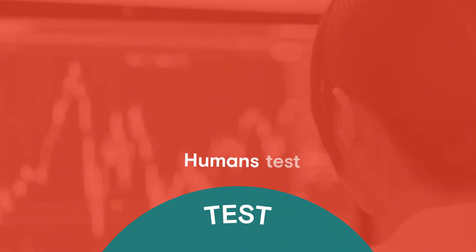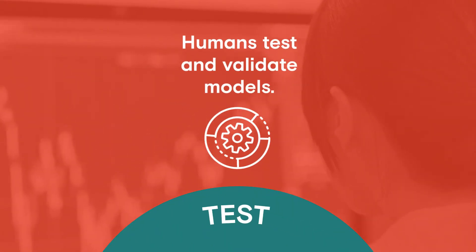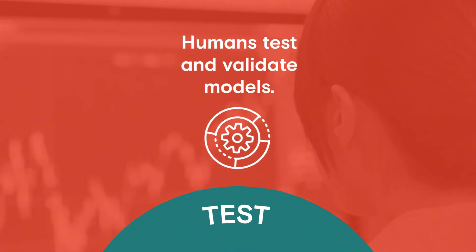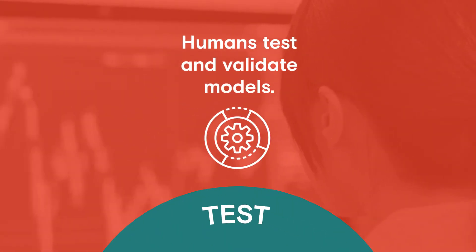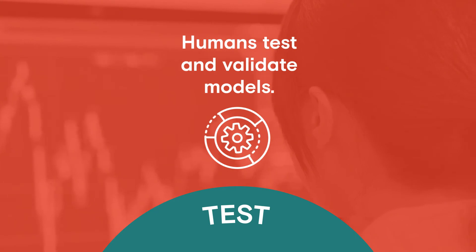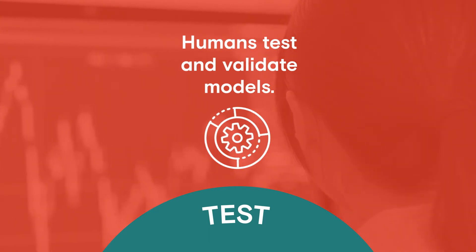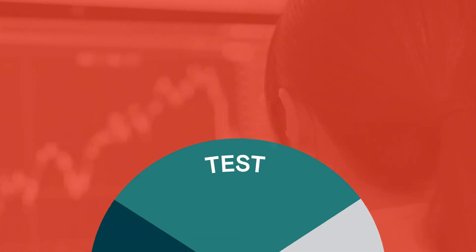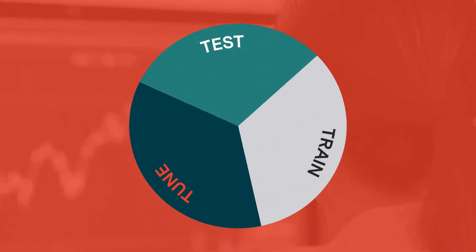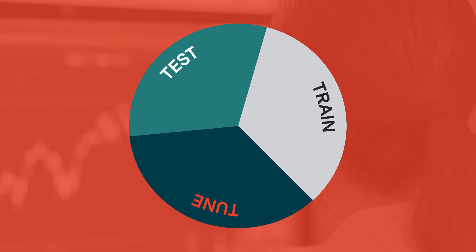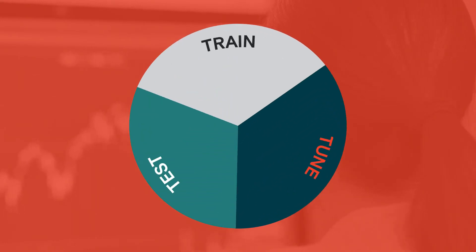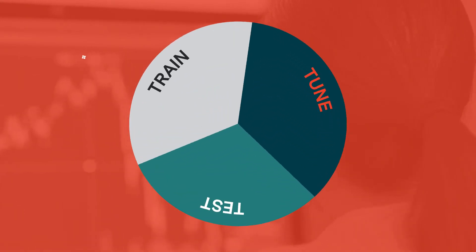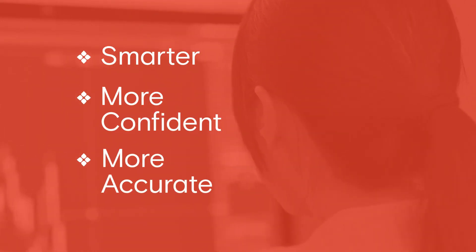Lastly, humans test and validate a model by scoring its outputs where there are errors or low-confidence predictions. These three actions provide a continuous feedback loop for an AI model to get smarter, more confident, and more accurate.